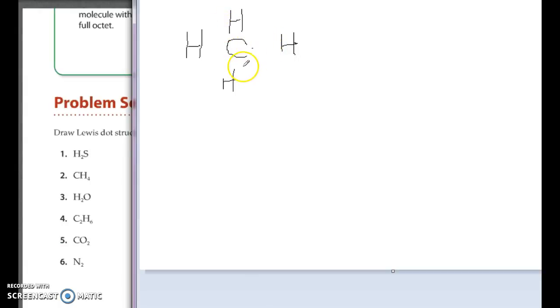All right. So number two. Each carbon has four valence electrons. Each hydrogen has one. So we have a nice, easy, single bond happening in all four directions.